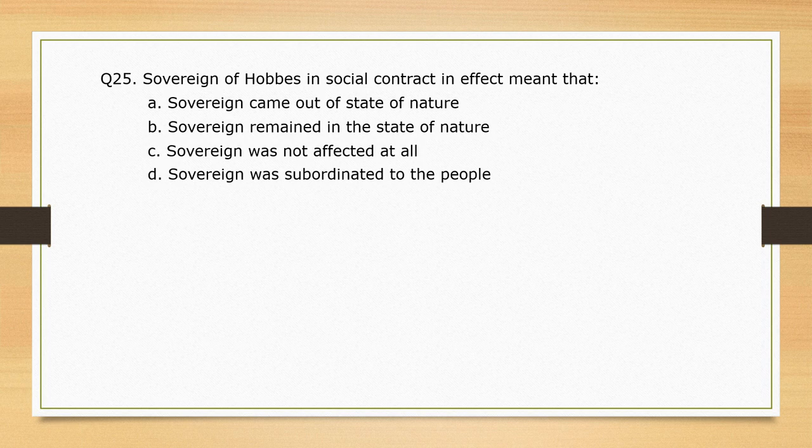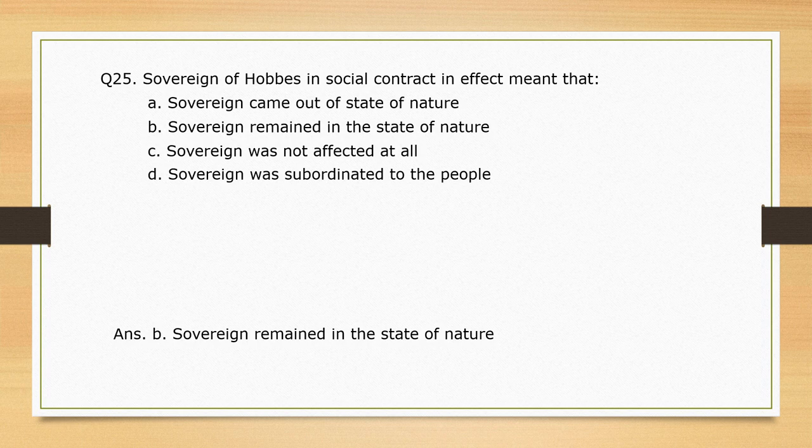Sovereign of Hobbes in the social contract — in effect — means that: the sovereign came out of a state of nature; the sovereign remained in the state of nature; the sovereign was not affected at all; the sovereign was subordinated to the people. The correct option is option B: the sovereign remained in the state of nature.